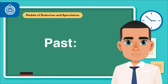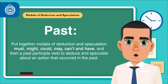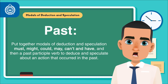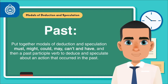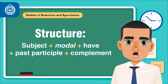Past. For modals of deduction and speculation in the past, we use: must, might, could, may, can't, and have, followed by a past participle verb to deduce and speculate about an action that occurred in the past. The structure goes as: subject plus modal plus have plus past participle plus complement.